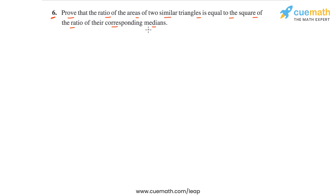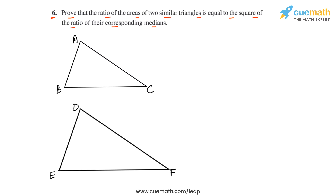So let's draw a figure to solve this problem. Here I have drawn two arbitrary similar triangles ABC and DEF. Now let's take a pair of corresponding medians. Let's take the median drawn from A to BC in the first triangle, where P is the midpoint of BC and we join A to P, giving us median AP. Similarly, Q is the midpoint of EF and we join D to Q, giving us median DQ in the second triangle.